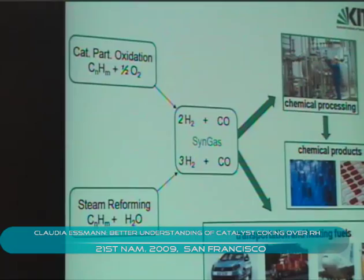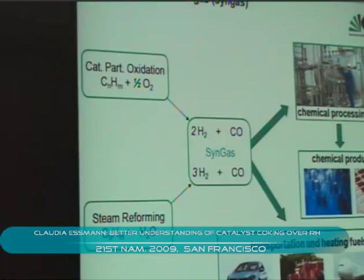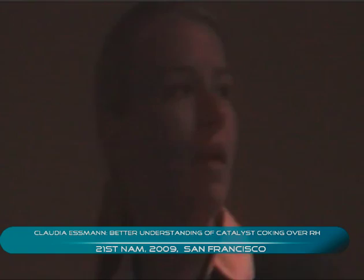During both processes, side reactions occur that I don't want to go into detail here. Nowadays there are a lot of applications for synthesis gas. It is used for the production of chemicals like ammonia or methanol, as well as for gas-to-liquid processes that result in the production of fuels. The produced hydrogen can also be used as fuel for fuel cells.